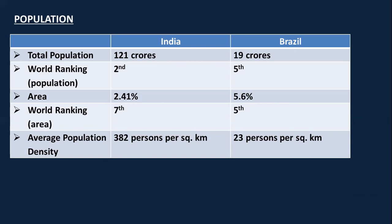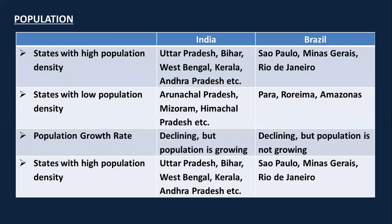On the contrary, Brazil ranks fifth in the world by population. Although it has 5.6% of the total land area of the world, it ranks fifth by area as well. The average population density of Brazil is only 23 persons per square kilometer. This information is very important from a give-reason perspective — explaining why India has more population density and Brazil has less.